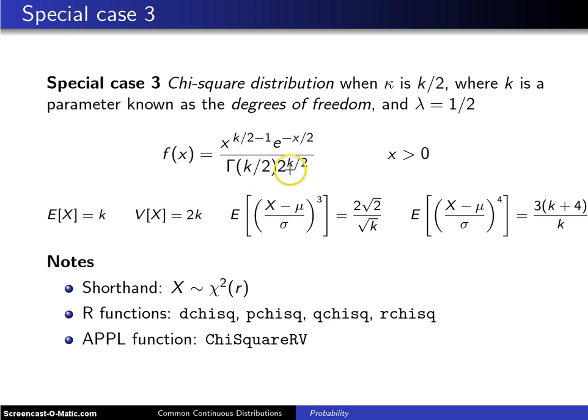In this case, the expected value of X is the number of degrees of freedom, the variance of X is twice the number of degrees of freedom, the population skewness is 2 square root of 2 over the square root of k, and finally, the kurtosis is 3 times k plus 4 divided by k.